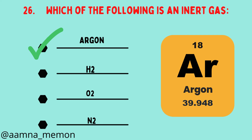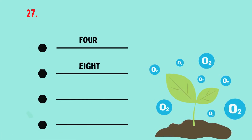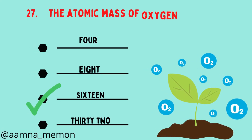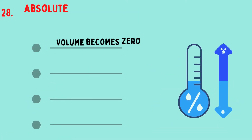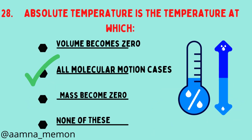Which of the following is an inert gas? Argon. The atomic mass of oxygen is 16. Absolute temperature is the temperature at which all molecular motion ceases.